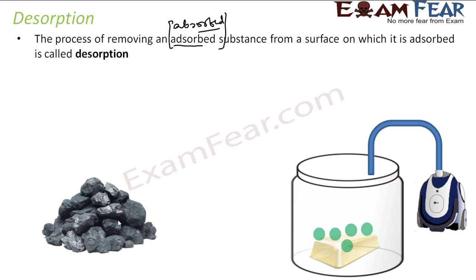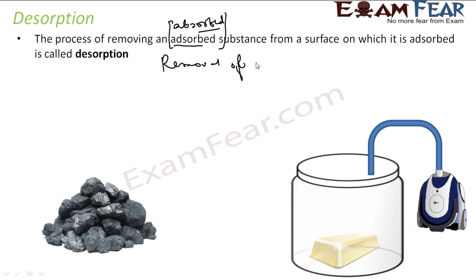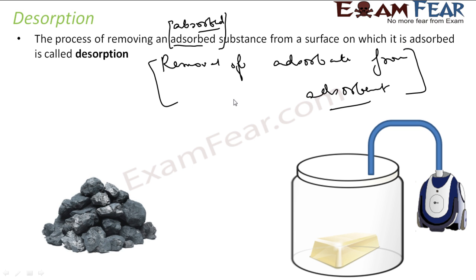The second example: on the surface of gold you have some gas. To remove this gas, you start a vacuum pump and the vacuum pump will suck all the gas molecules, leaving the surface free of gas. So in both cases, the adsorbent had some particles adsorbed and we removed them. This process of removal of the adsorbed substance from the adsorbent is called desorption.